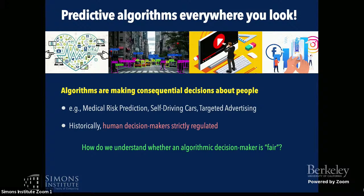For instance, algorithms are used in medical risk prediction, they're driving cars, they're running targeted advertising campaigns. In each of these contexts, historically, the human decision makers involved in medical risk prediction or driving cars have been highly regulated. If you want to be a doctor or drive a car, you have to get a license. Advertising is highly regulated by federal law and protects against discrimination on the basis of race and gender. So as we move towards systems where algorithms are replacing human decision makers, it becomes increasingly important to understand how we're supposed to regulate these things and what it even means for an algorithmic decision maker to be fair or unfair.